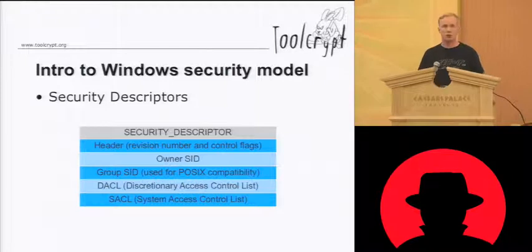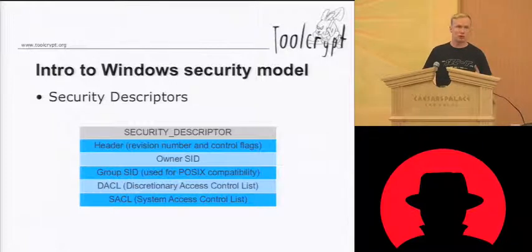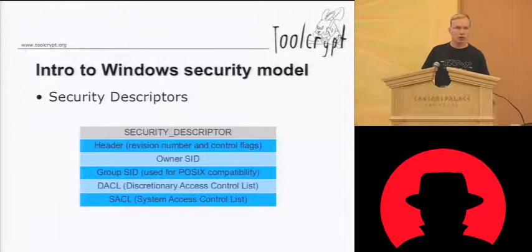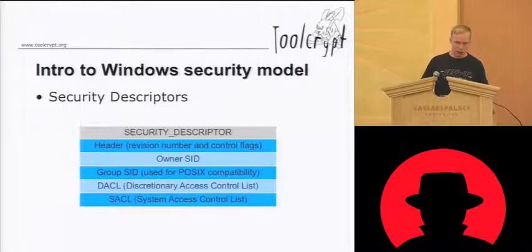A security descriptor is basically a label you put on a system resource — an operating system resource — that controls the security access to that resource. In the security descriptor data structure, you'll have some fields like the owner of the object, the group of the object (basically just used for POSIX, because in Unix systems we have an owner and a group we can set permissions for, but not really used in the Windows world), and some access control lists. There's a discretionary access control list, which is used to grant or deny access to the system resource. And there's the system access control list, which is used for, among other things, auditing.